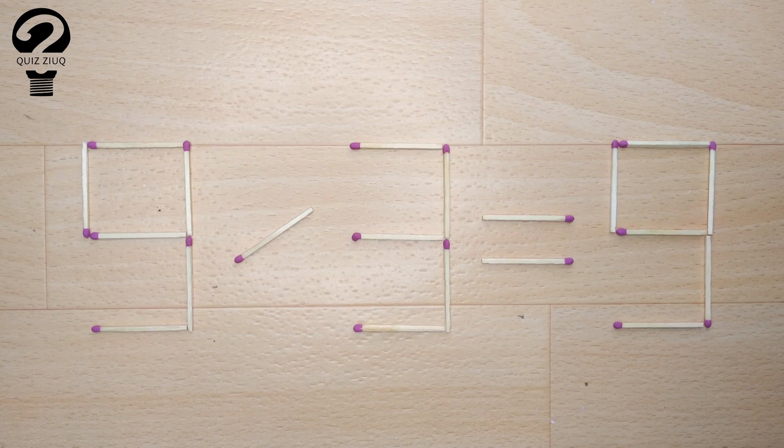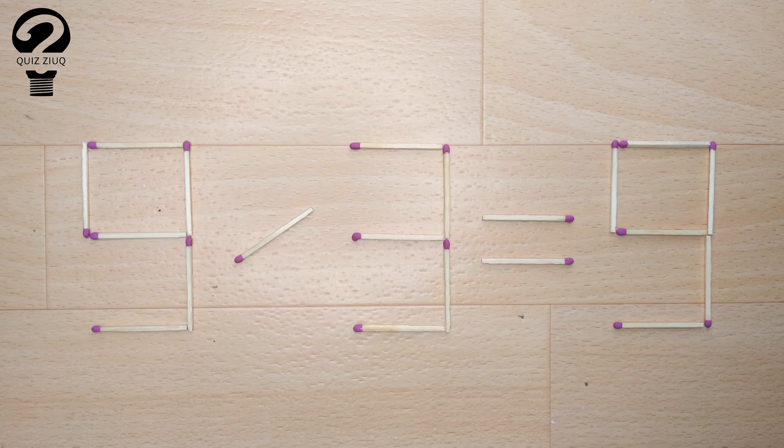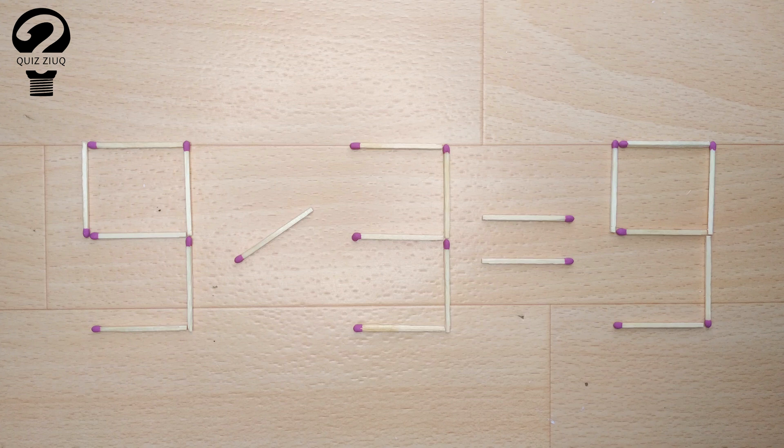Here's the next puzzle. We have this equation, 9 divided by 3 equals 9. Our equation is incorrect and we need to move two matches to make our equation correct.